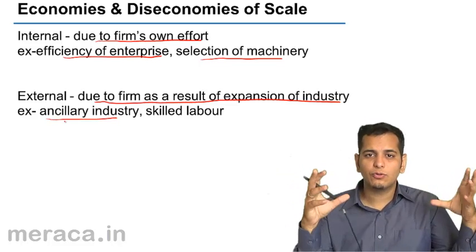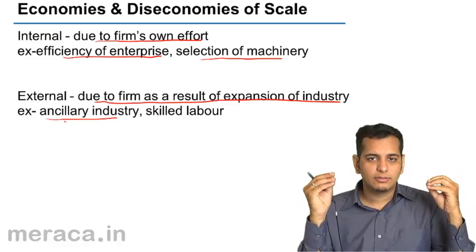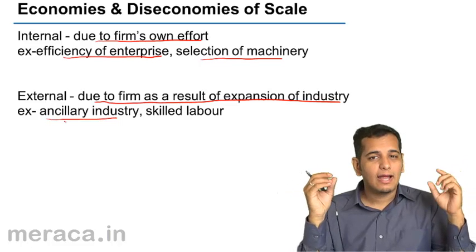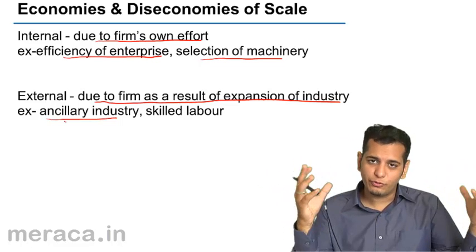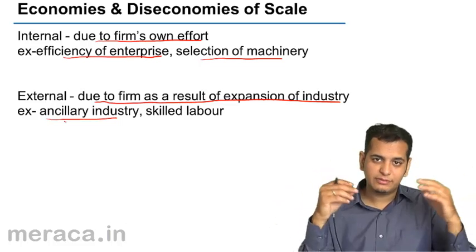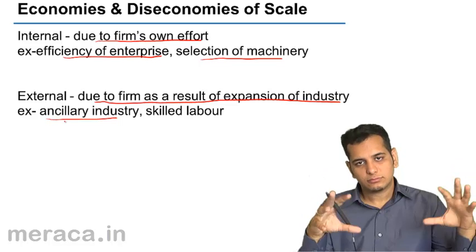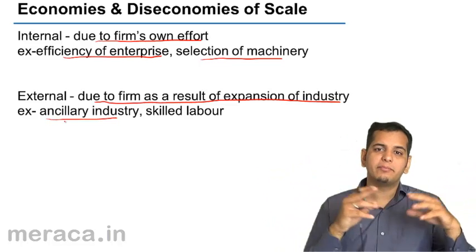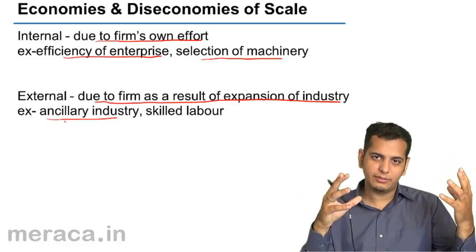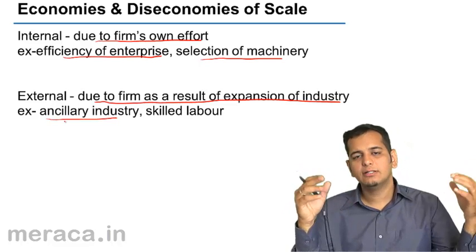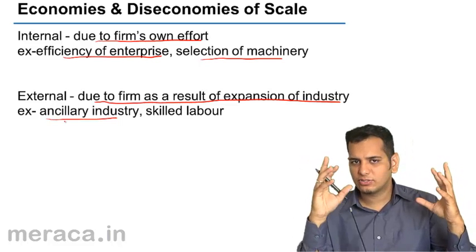Now, if all these industries grow, you are bound to get a better product and offer your customers a better buy at a lower rate. So when your firm grows because of factors beyond your control — the growth of ancillary industries, the growth of your own industry, or the labour overall becoming skilled, not just within your firm but across the whole industry — you tend to get economies from it, and these economies are called external economies.